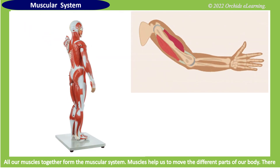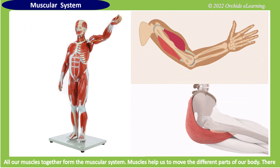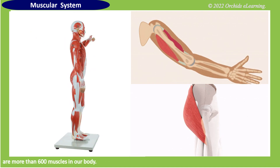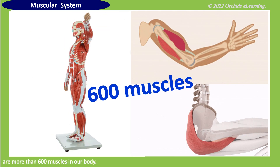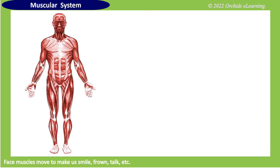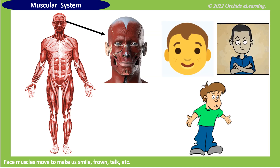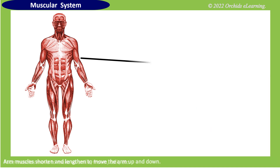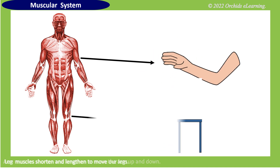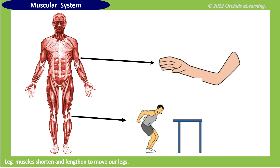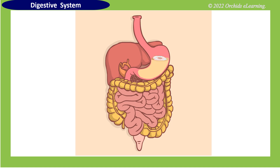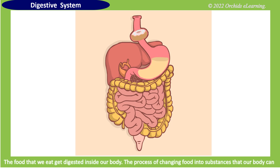Muscles help us to move the different parts of our body. There are more than 600 muscles in our body. Face muscles move to make us smile, frown, talk, etc. Arm muscles shorten and lengthen to move the arm up and down. Leg muscles shorten and lengthen to move our legs.